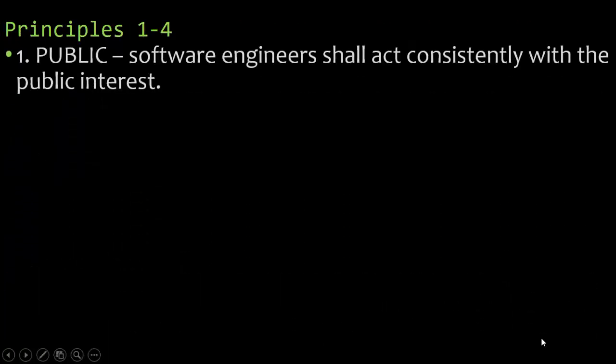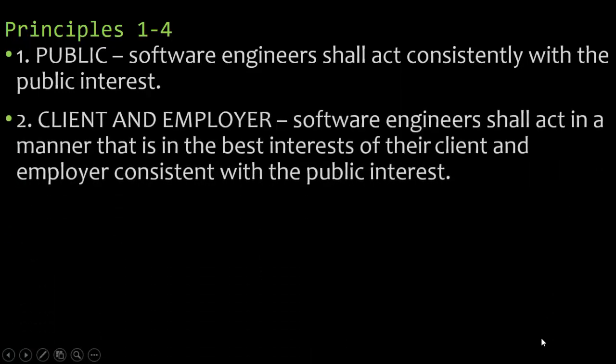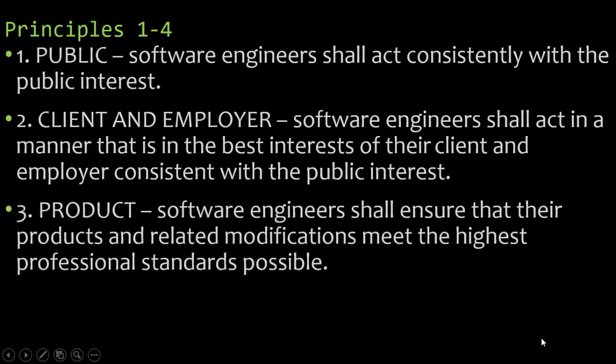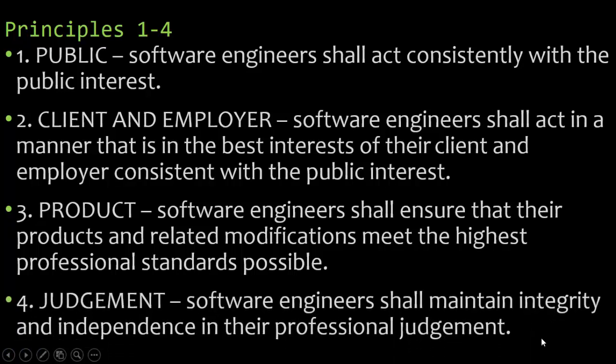Principles one to four: First, public — software engineers shall act consistently with the public interest. Second, client and employer — software engineers shall act in the best interest of their client and employer, consistent with the public interest. Third, product — software engineers shall ensure their products and related modifications meet the highest professional standards possible. Fourth, judgment — software engineers shall maintain integrity and independence in their professional judgment, meaning they will not be influenced by others.